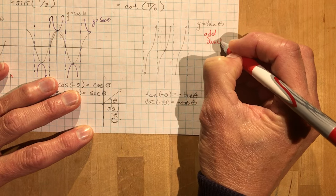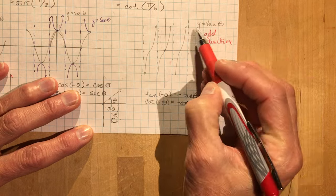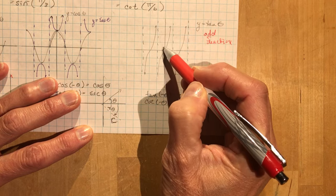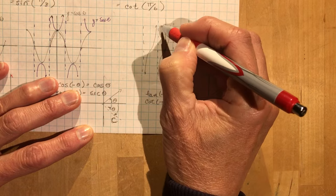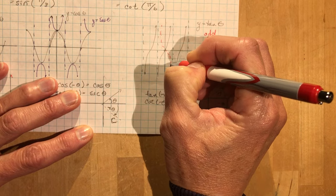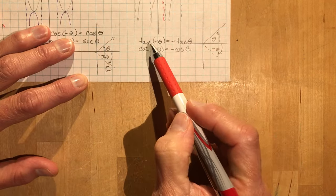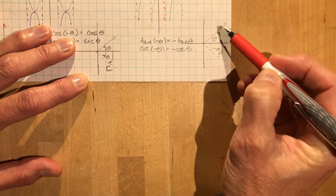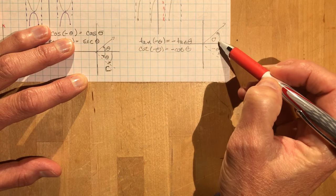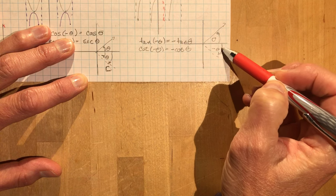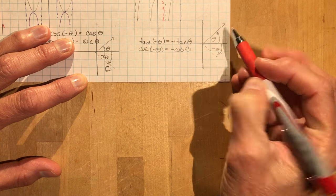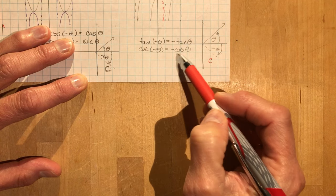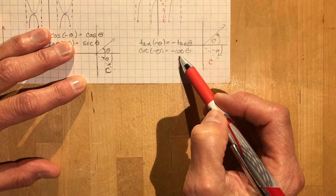So that means that if I take the tan of negative theta, I would have this point over here, which is going to give me negative tan theta, because it's going the opposite direction. So tan of negative theta is the negative tan of theta. Same thing if we look at it on the coordinate plane here. If I do a negative theta here, only cos is positive, so it has to be the negative tan of theta, and also the negative cotangent of theta.